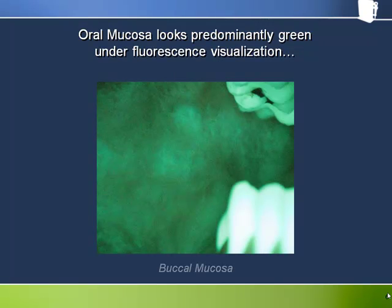Because the fluorophores in the epithelium and stroma fluoresce mainly in the green when illuminated with blue light, oral mucosa looks predominantly green in appearance when viewed through the Velscope handpiece. This picture shows the inside of the cheek. Incidentally, you can also see the teeth here — teeth fluoresce more strongly than anything else in the oral cavity.